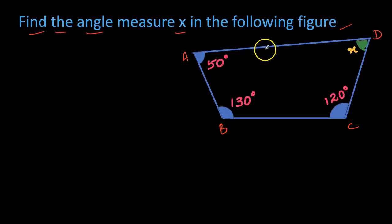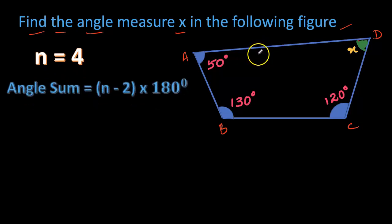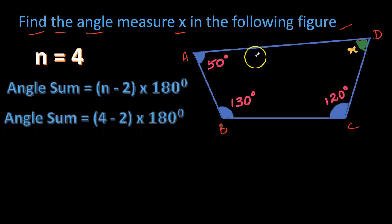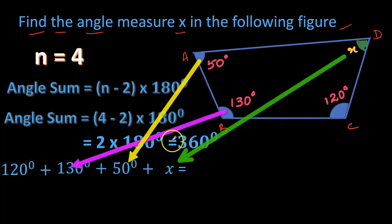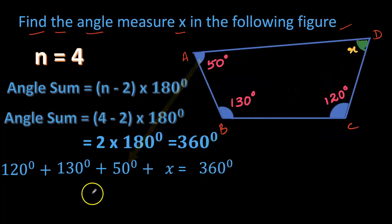We should find out the number of sides. Here it is four sides, so n is four. Angle sum is (n - 2) × 180, so we write (4 - 2) × 180. That means 2 × 180 = 360 degrees. One angle is 120 degrees, then 130 degrees, 50 degrees plus x equals 360 degrees total. So when we add all this we get 300 + x = 360 degrees.